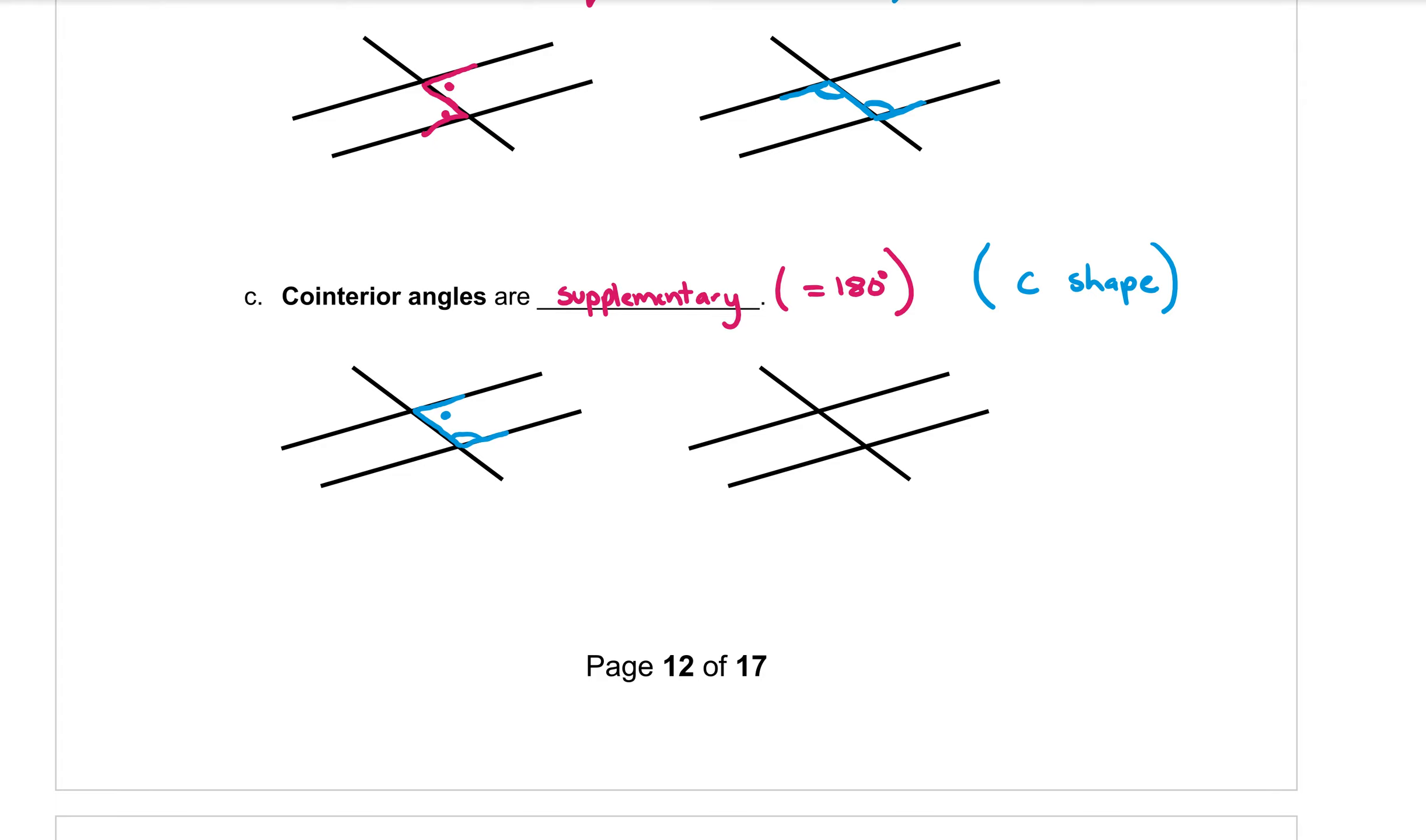That would be a C shape in there, which would mean this angle and the one below it. Now I'm giving them different symbols because these angles aren't equal remember. They're adding to give 180 degrees. So those two angles would be co-interior.